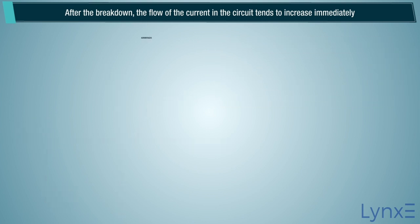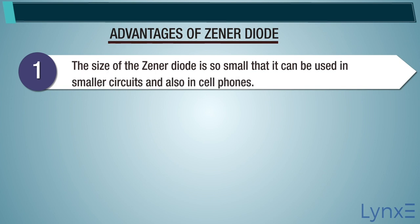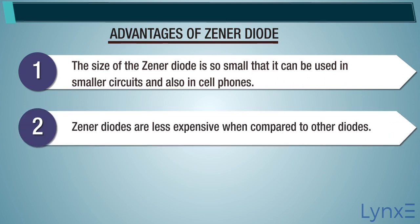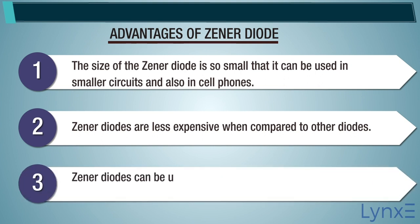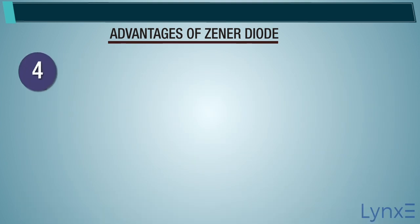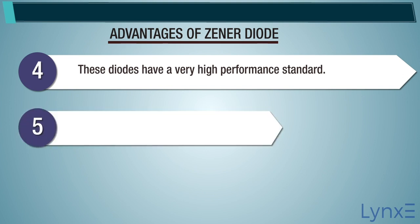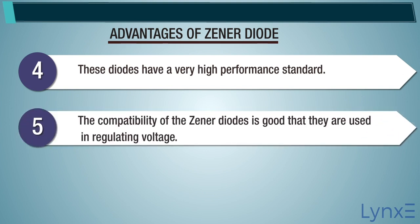Following are the advantages of the Zener diode. The size of the Zener diode is so small that it can be used in smaller circuits and also in cell phones. Zener diodes are less expensive when compared to other diodes. They can be used for controlling, regulating, and stabilizing the voltage in the circuit. These diodes have a very high performance standard and good compatibility for regulating voltage.